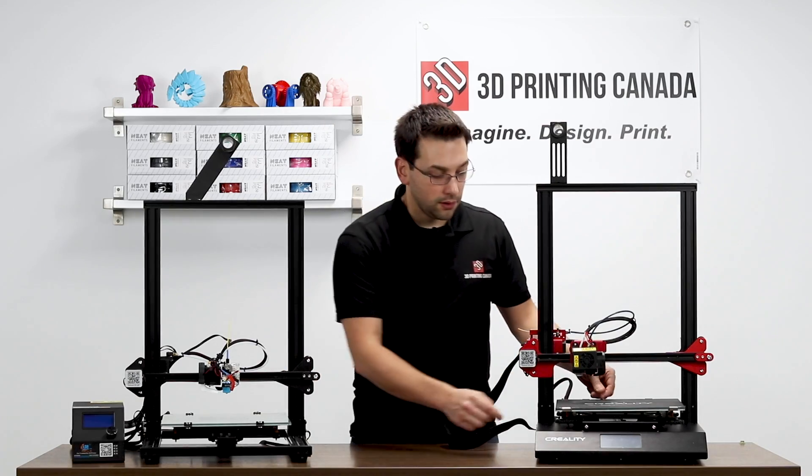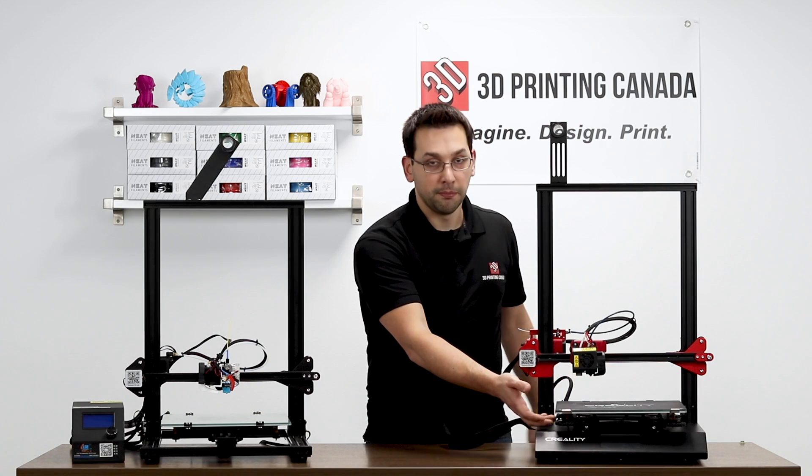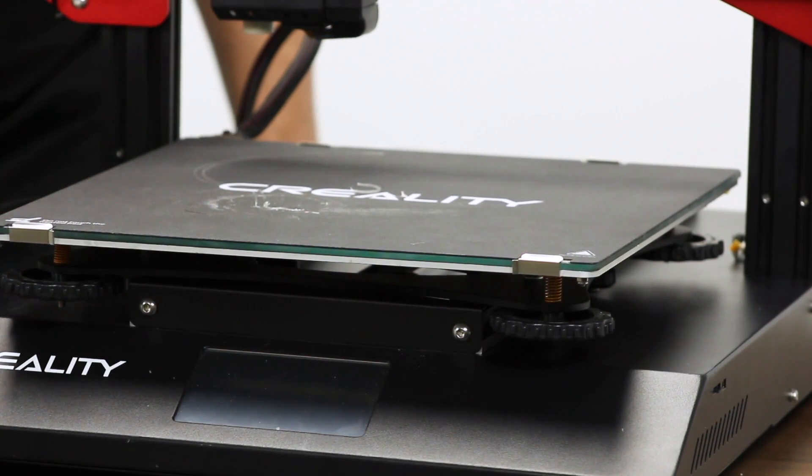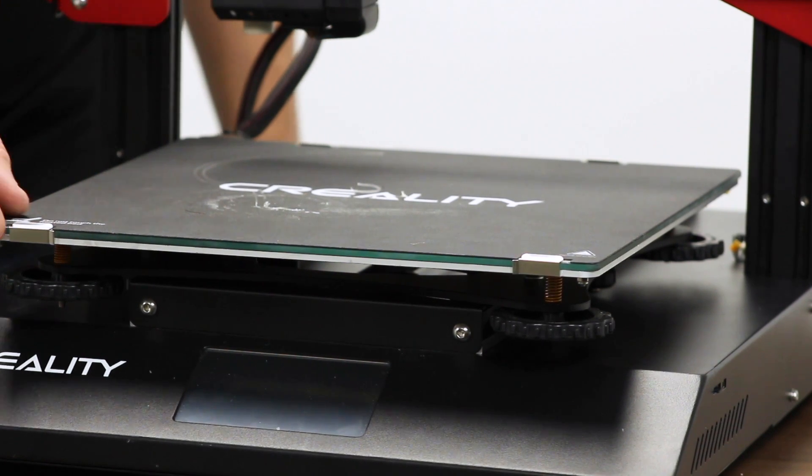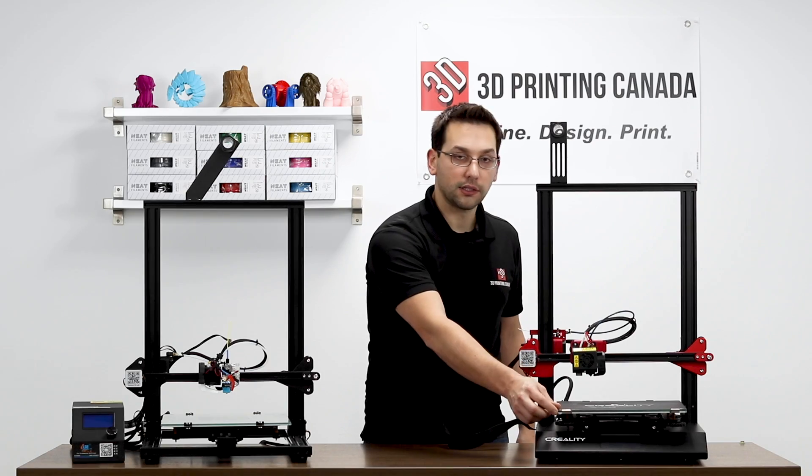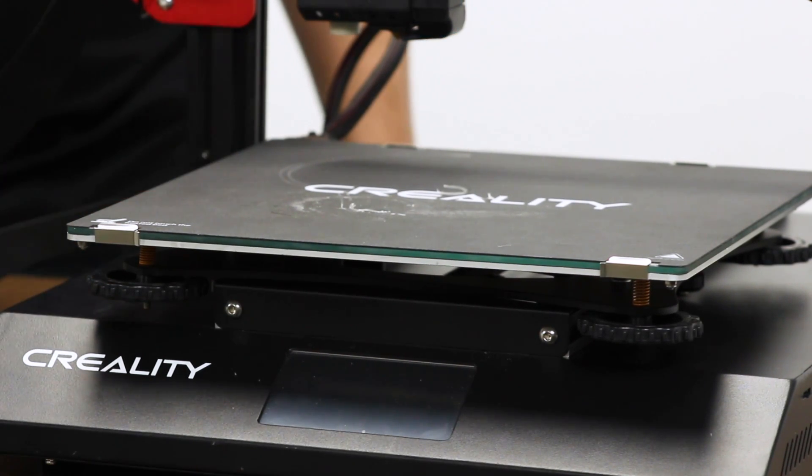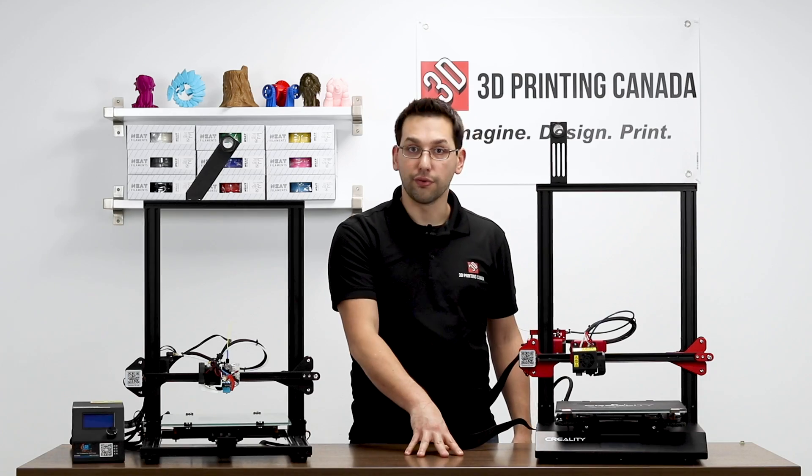So on the CR-10S Pro, we still have the aluminum build plate. Obviously, it's 24 volts instead of 12 now, like I mentioned. Three-millimeter glass on top of that. And on top of that three-millimeter glass, they have bonded this. It's kind of like a build-tack material. It's very similar to the material that we've seen on the Ender 3 for a while. And things bond to it extremely well.